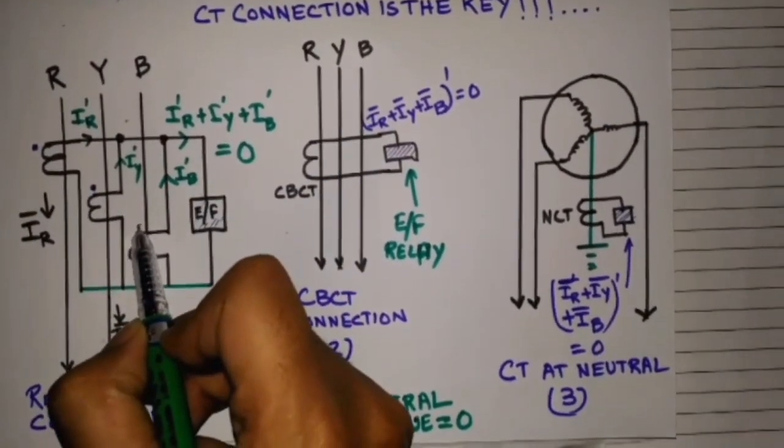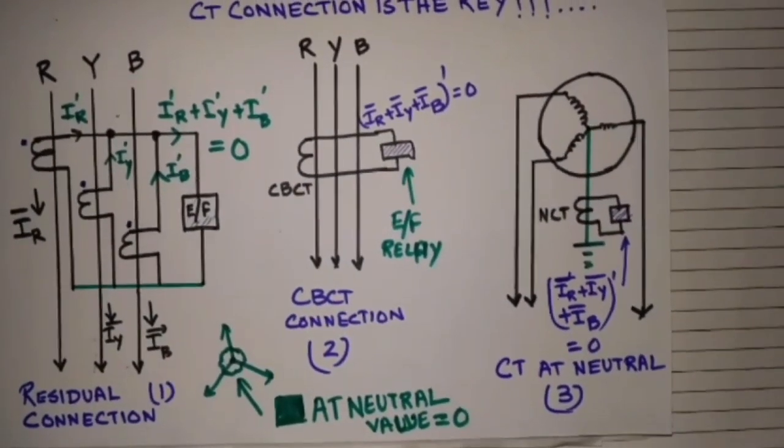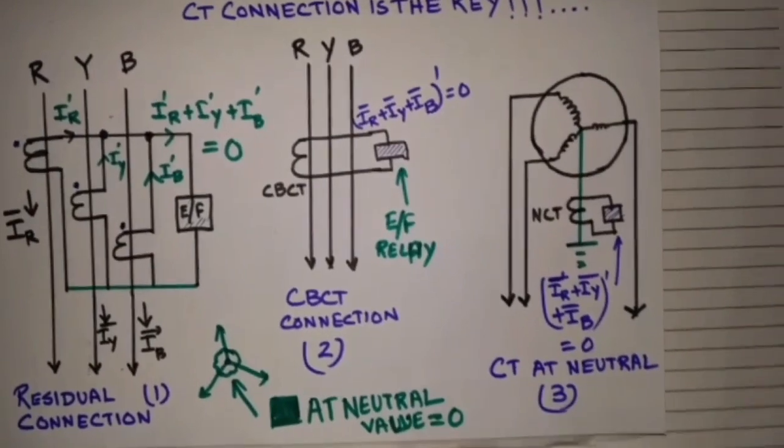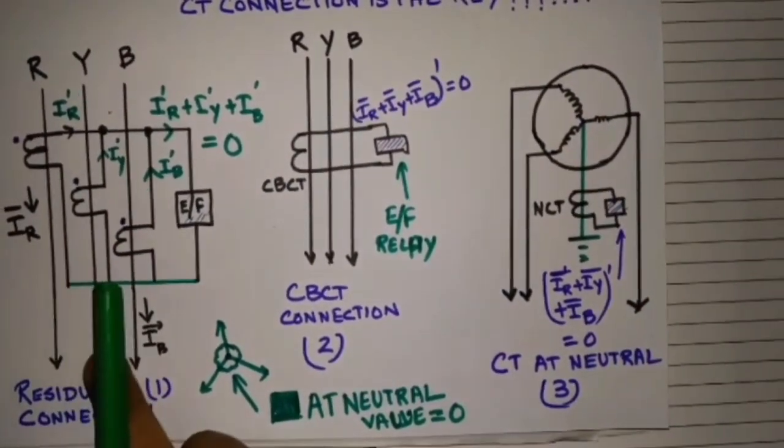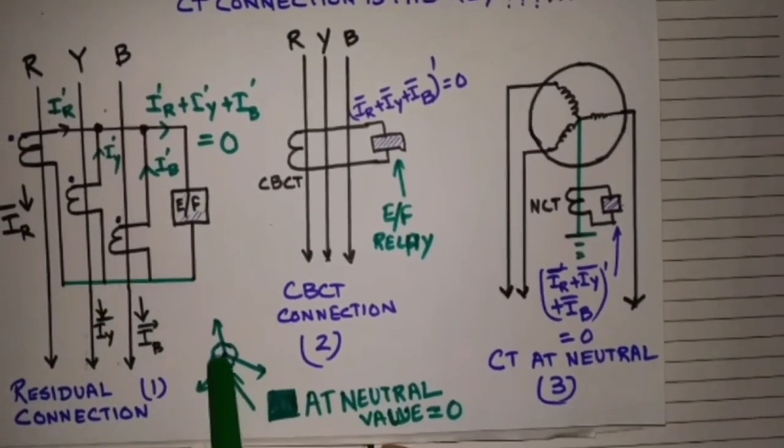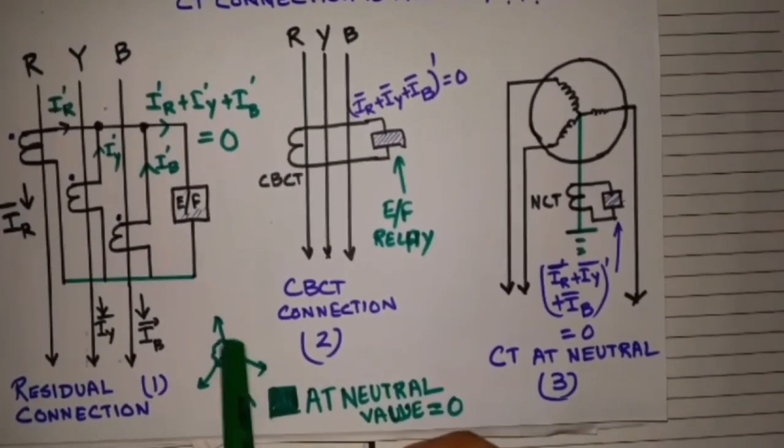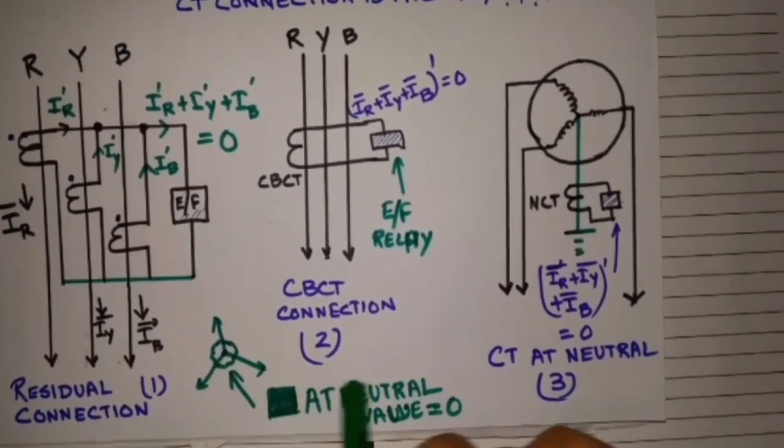So this point, this point, and this terminal should have same polarity. If this is IR, IY, IB, if this is a balanced system, current at neutral, their summation will be zero.